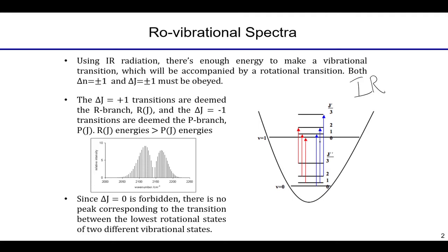Each of these six different arrows represents six different peaks in the spectra. Three of those are from the P branch on the left, which is at lower energies, because those are the delta J minus one transitions. And the R branch on the right has three blue arrows which are the delta J plus one transitions. There is no zero-to-zero transition because that does not obey the selection rule derived for rovibrational spectroscopy.